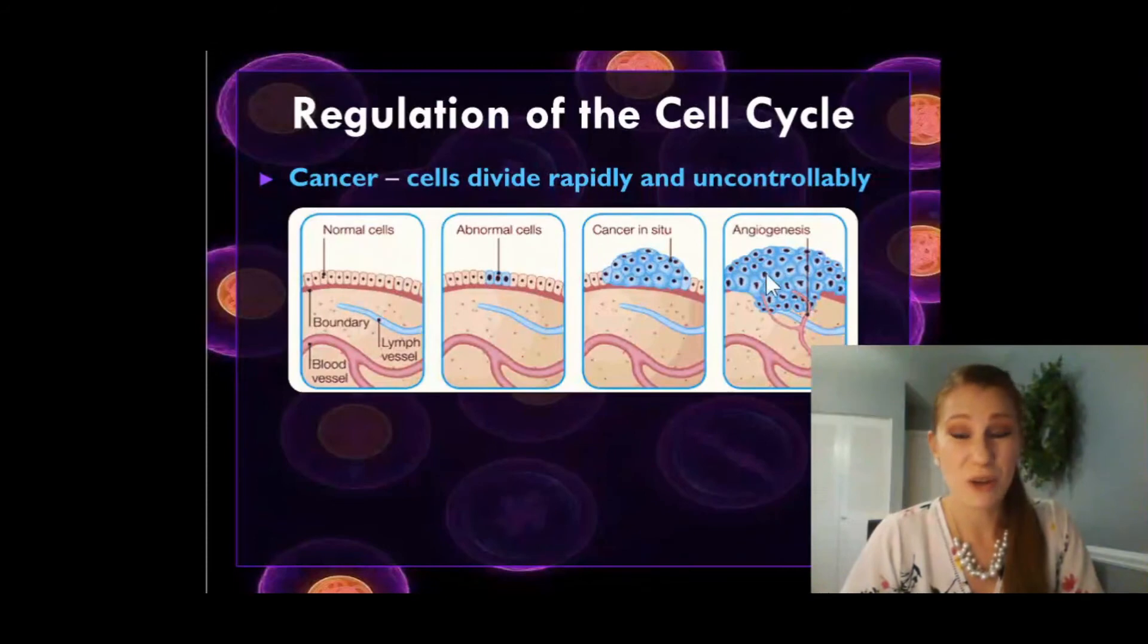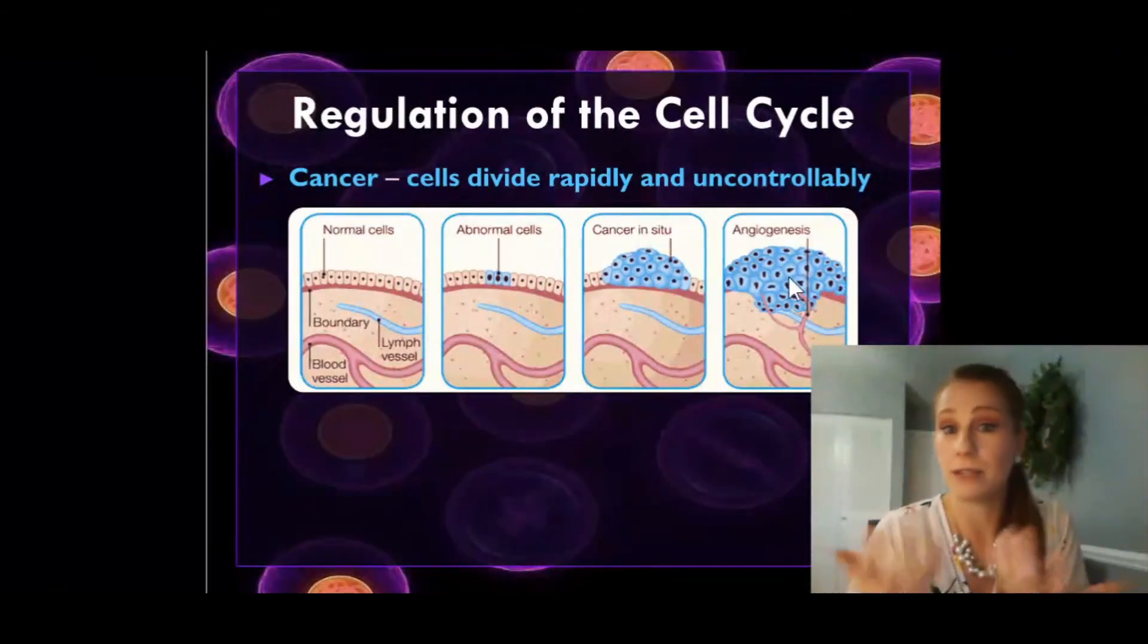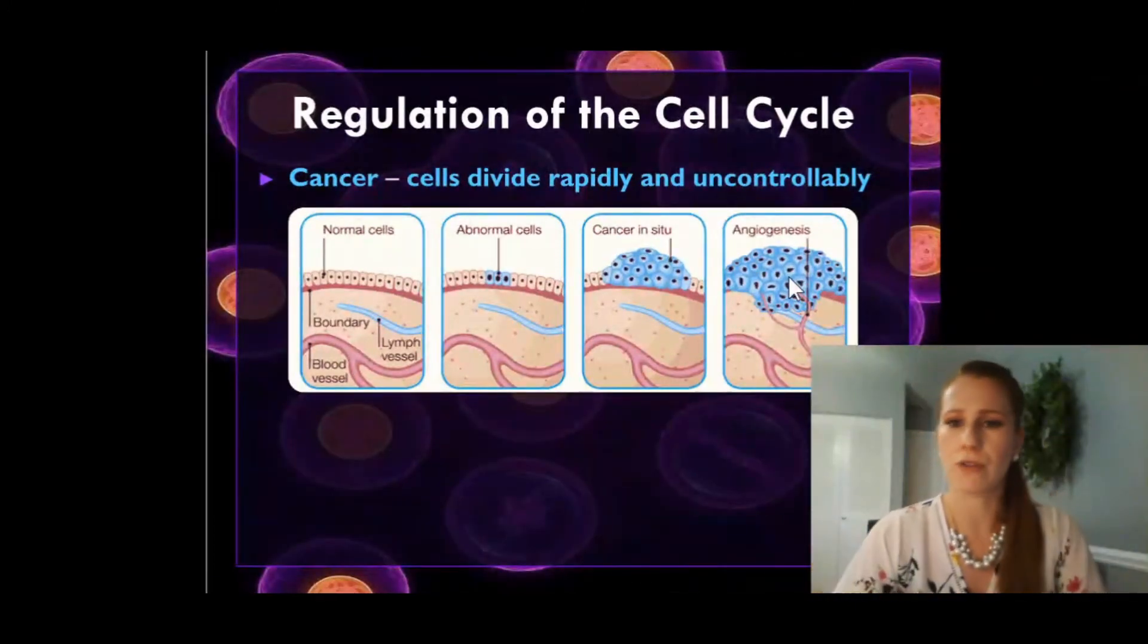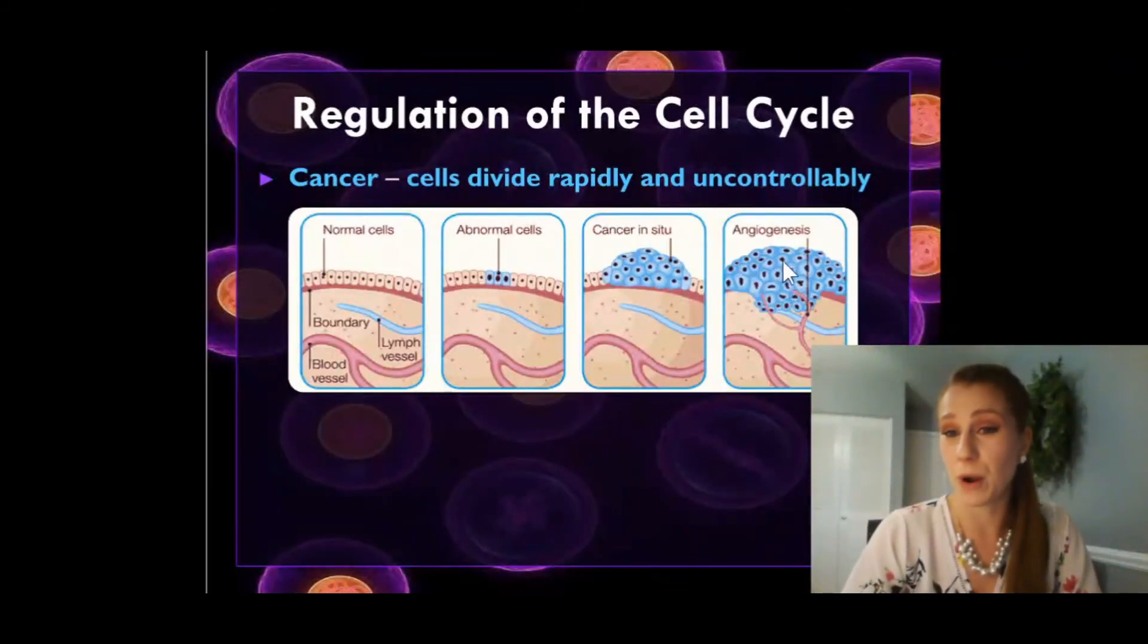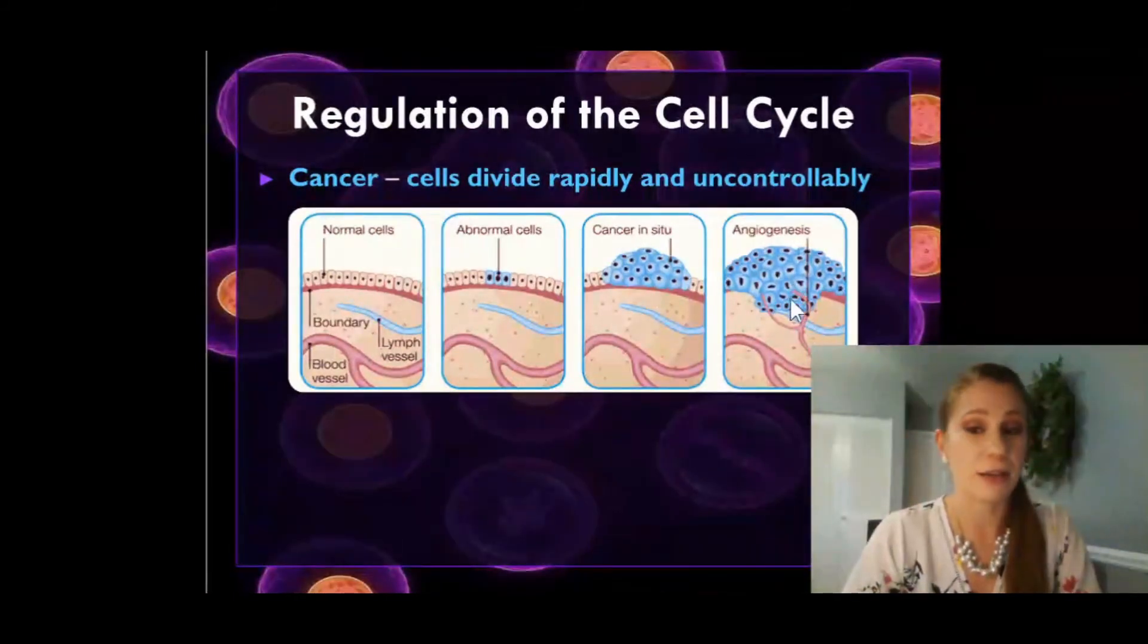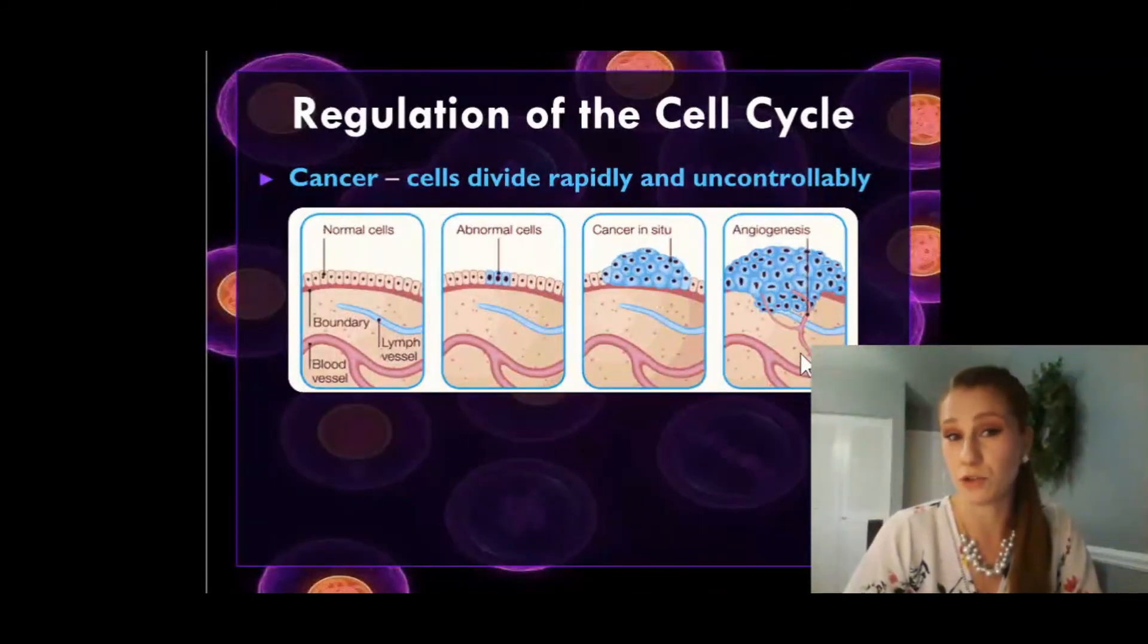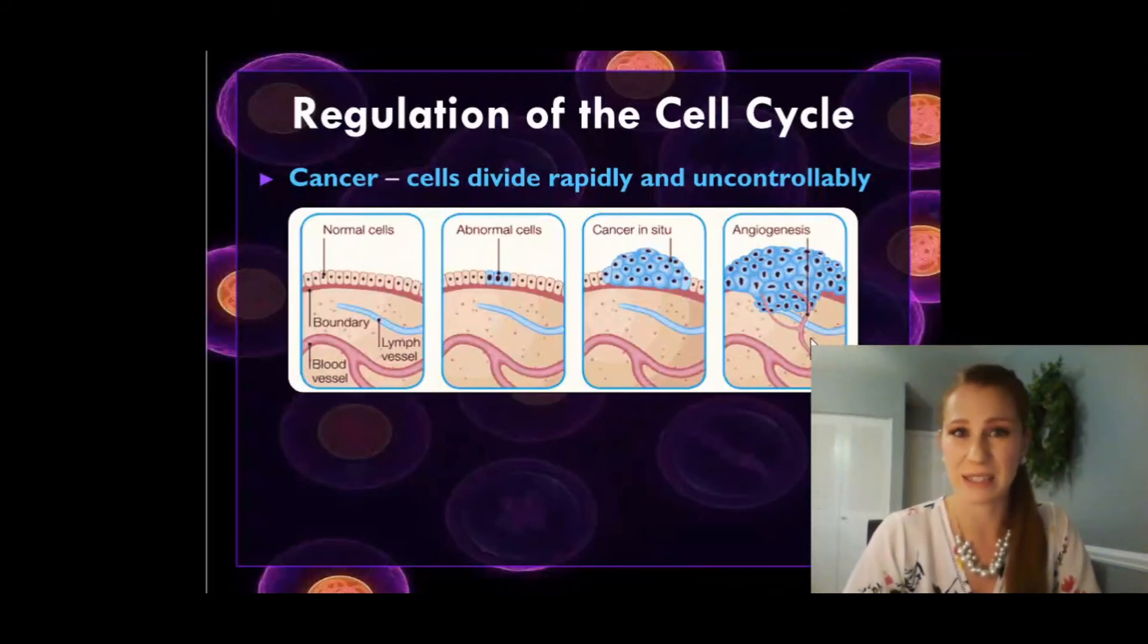Eventually, your body starts trying to feed that cancerous mass called a tumor because it's living cells. It thinks, hey, that's me. I need to get some blood flow there. I need to make sure that those cells have nutrients. So your body will start to feed that tumor by giving it red blood cells to supply it with oxygen and nutrients. And that's how a tumor can get really bad and spread throughout the body called metastasis.